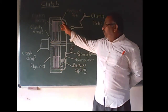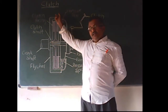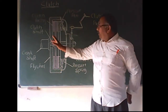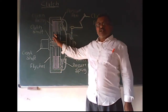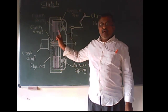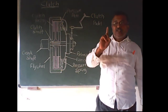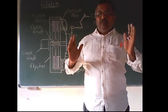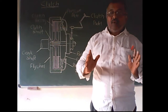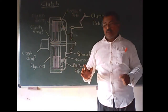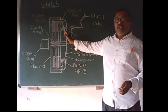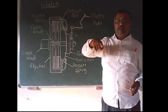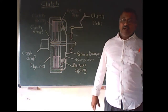In this class we are going to study single plate clutch, where only one friction plate is used — only one disk is used. In multi plate clutch we are using more than one friction plate. That clutch assembly is known as multi plate clutch.